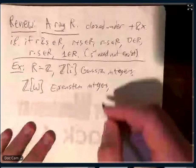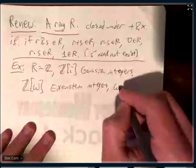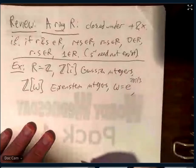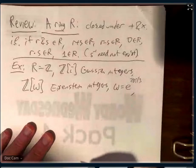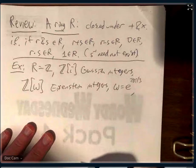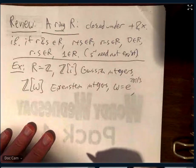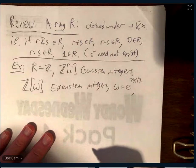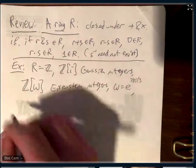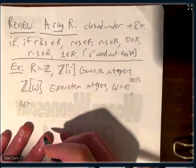One way to define omega is that it's e^(2πi/3). What is this at least — give me the real part plus i times an imaginary part.